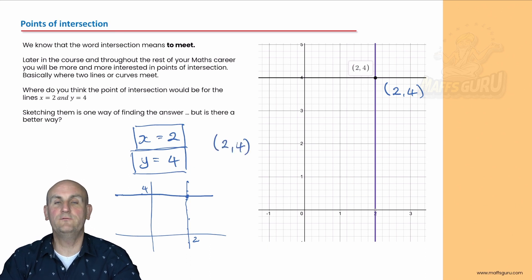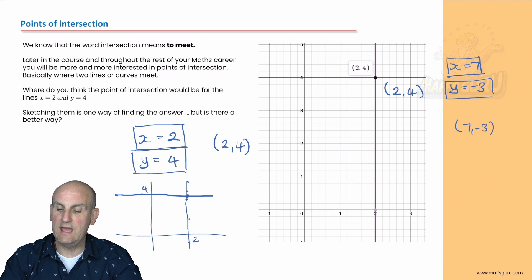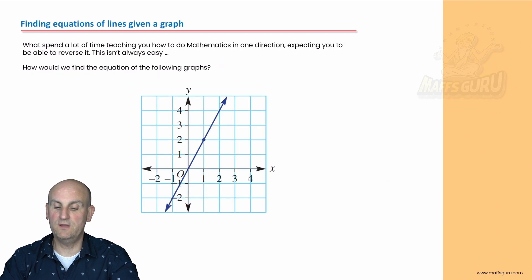I could have just written down 2 comma 4. So if I gave you x equals 7 and y equals minus 3, where do they meet? Hopefully you've just said 7 minus 3. This line here every x value is 7, this line here every y value is minus 3, and that one place they meet has x value 7 and y value negative 3.